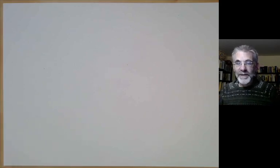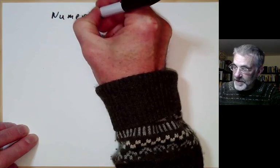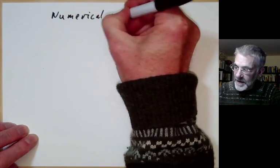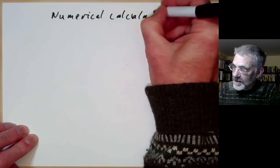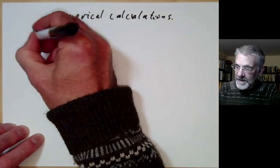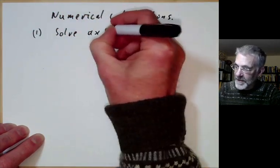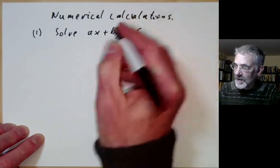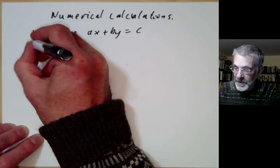This lecture is part of Berkeley Math 115, an introductory undergraduate course on number theory, and it will be about numerical calculation. Let's have some typical examples of problems you might want to calculate the answer to. First of all, we might want to solve AX plus BY equals C, where A, B and C are given, and this is of course just something to do with Euclid's algorithm.